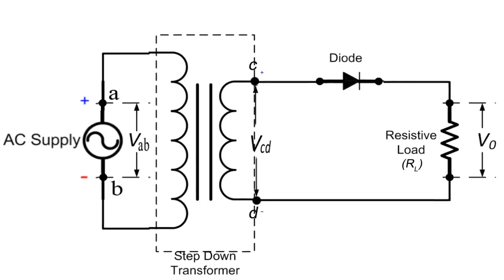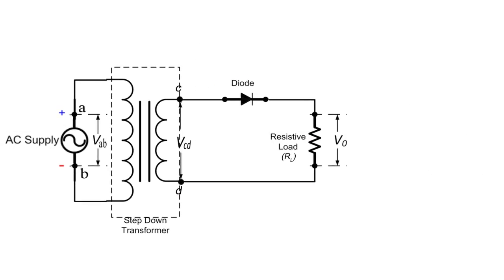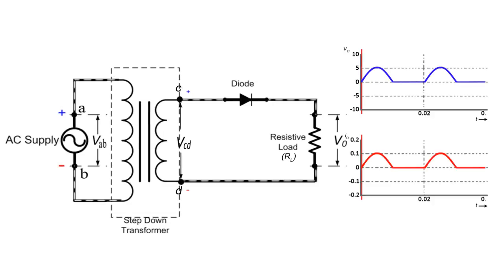As a result, diode behaves like a closed switch. We have already discussed it. And this positive cycle appears across the load and current flows through the load resistor RL.